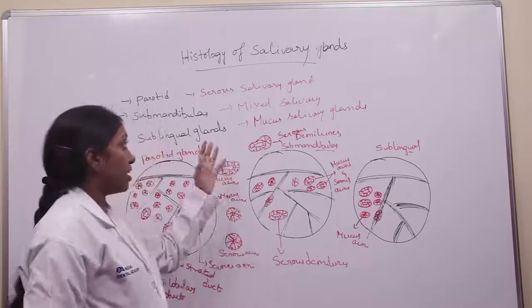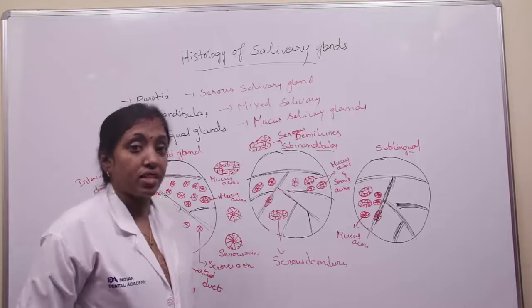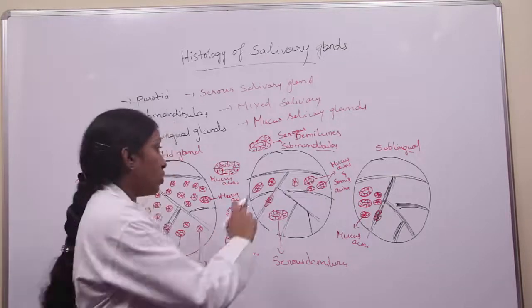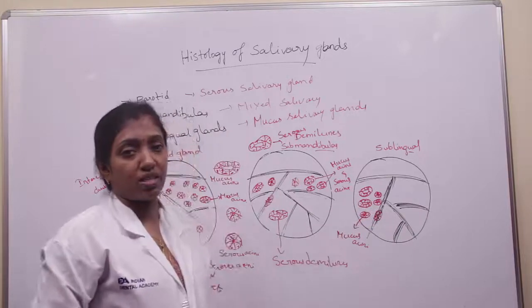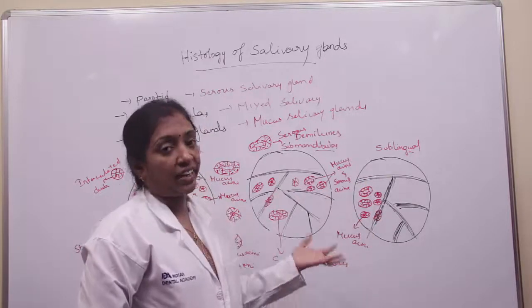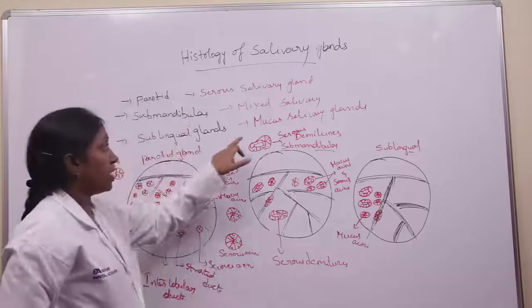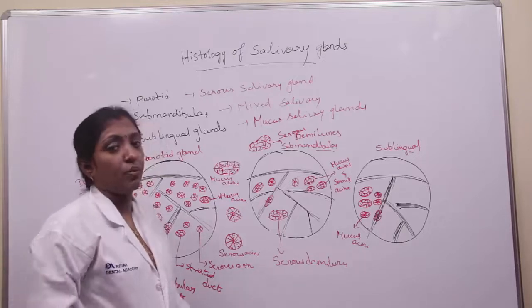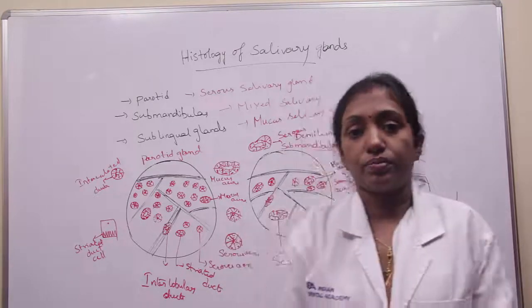Coming to the submandibular gland — it is a mixed salivary gland consisting of both mucous acini and serous acini. The most important characteristic feature is serous demilunes, meaning mucous acini are capped by serous acini — this feature is seen only in the submandibular gland. Coming to the sublingual gland, it consists of more number of mucous acini and very few serous acini, along with intercalated ducts, striated ducts, and interlobular ducts. The sublingual gland is an example of a mucous salivary gland, the submandibular gland of a mixed salivary gland, and the parotid gland of a serous salivary gland.